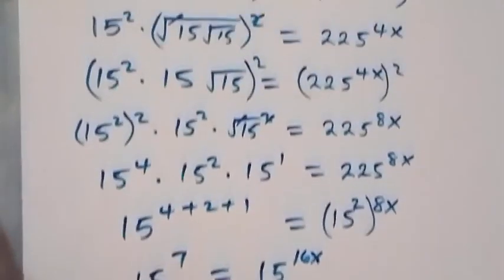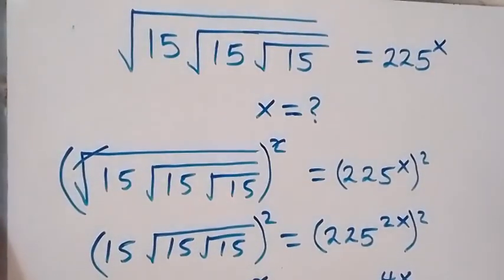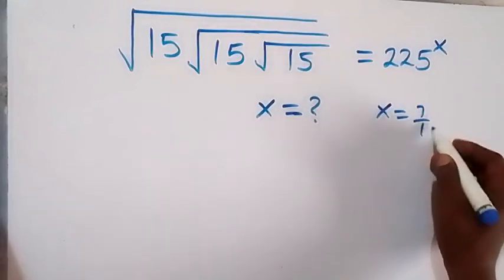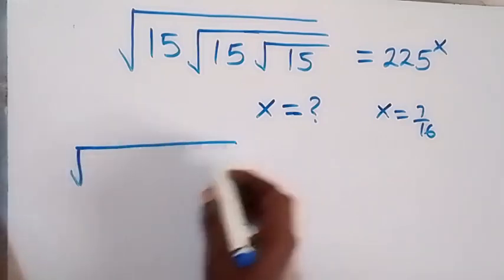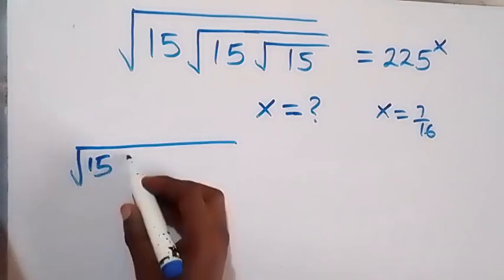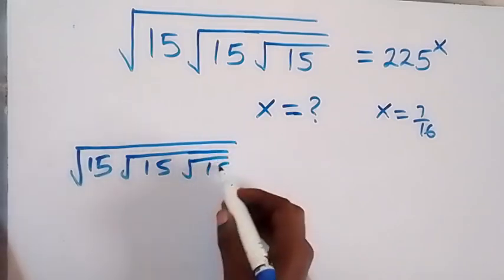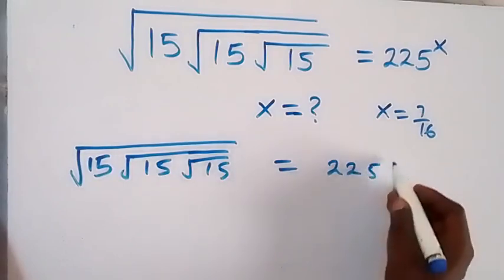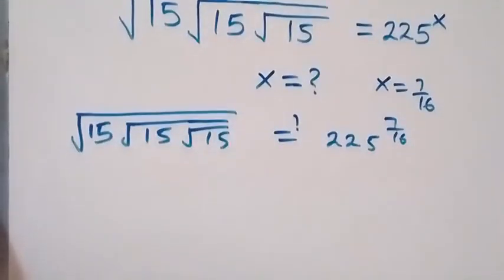To check if this satisfies the given problem, let's substitute x equals to 7 over 16 here. From here, this becomes square root of 15, then root 15, then inside that root 15, equals to 225 raised to power 7 over 16. From here we can separate this.